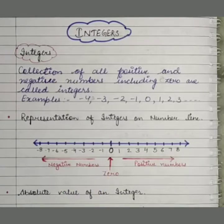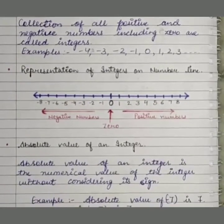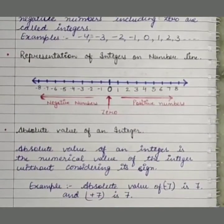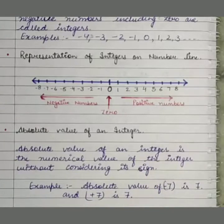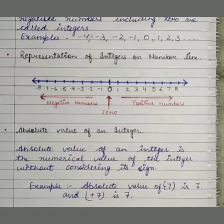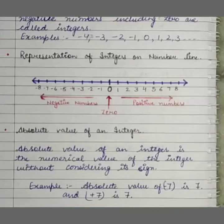Now, absolute value of an integer. What is the absolute value? Absolute value of an integer is a numerical value with no sign — it will not consider any sign. Suppose we have to find the absolute value of minus 7, so it will remain 7. For minus 14, absolute value will be 14. Similarly, for plus 14 it will remain 14, and plus 7 will remain 7.